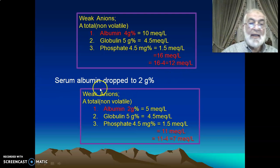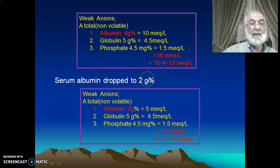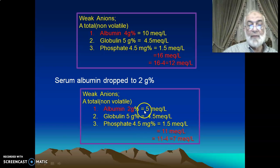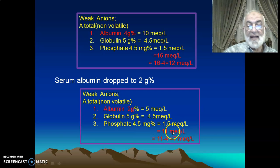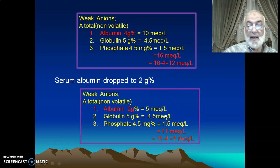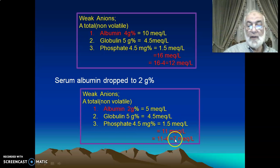If albumin drops to 2 grams, then 2 grams of albumin gives only 5 milliequivalents. So the total reference weak acid becomes 11 milliequivalents per liter. More than 11 will be high anion gap, less will be low anion gap. If I don't include potassium, my reference becomes 7 milliequivalents: more than 7 is high, lower than 7 is low, and normal is 7.